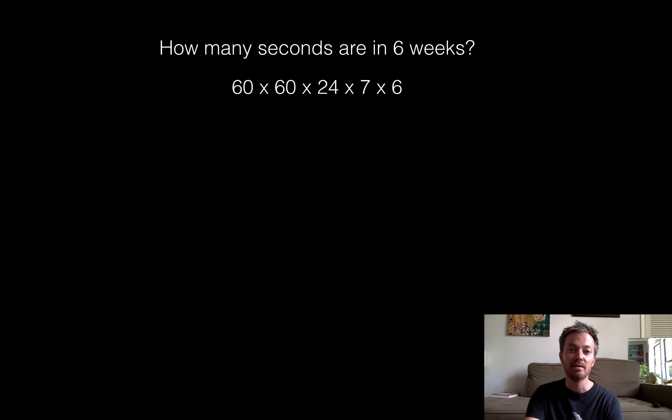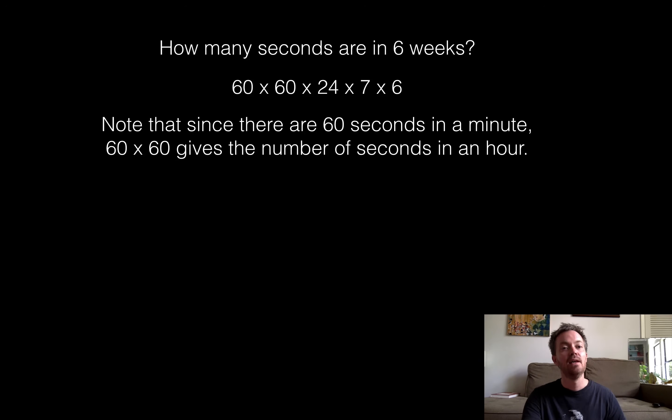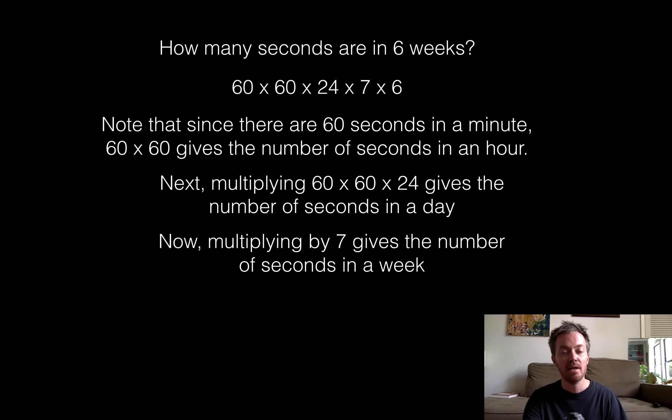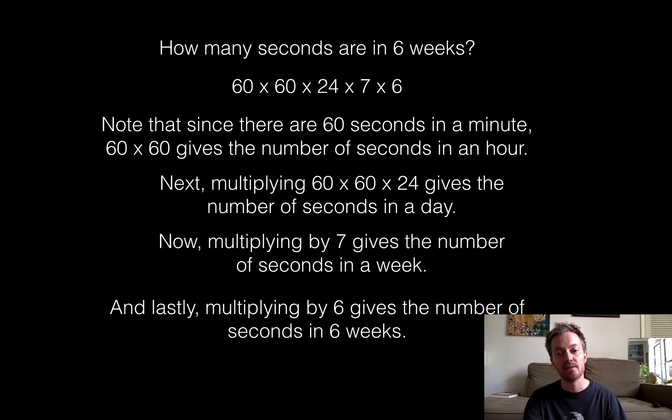So let's see if we can justify it. So I claim that in six weeks there's 60 times 60 times 24 times 7 times 6 seconds. And to get that again, okay, there's 60 seconds in a minute. Multiply that by 60. That'll give us the number of seconds in an hour. Multiply that by 24 to get the number of seconds in a day. Times 7 will give you the number of seconds in a week. And then multiply by 6 to give you the number of seconds in six weeks.